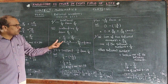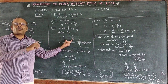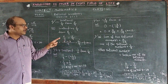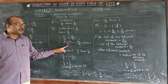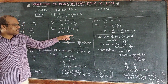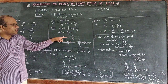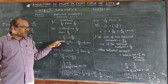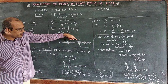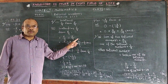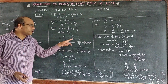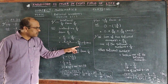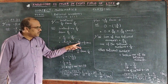The denominators are already the same — both are 9 — so we do not need the LCM procedure here. The common denominator is 9. The numerators as written give us 5 minus 2, which equals 3. So we get 3 by 9. There is a common factor of 3: 3 over 9 simplifies to 1 by 3, which is our answer.